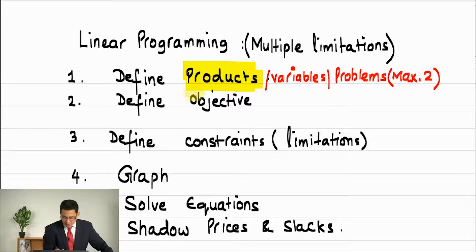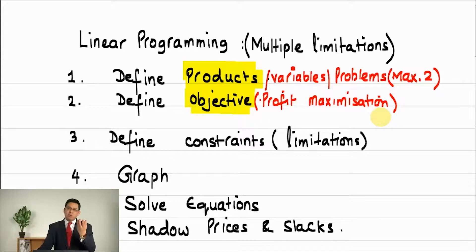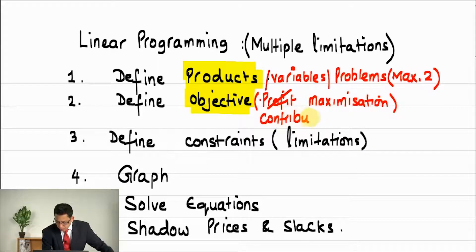Once we know our products, then second is define objective. Objective is an aim of the management which they want to achieve by efficient utilization of resources or these scarcities. This aim is mostly profit maximization. As we discussed applications of relevant costing or marginal costing, there is a slight shift of focus rather than on profit maximization, we start calling it contribution maximization. Aim is to maximize contribution rather than profit because in making decisions we use the marginal costing or relevant costing principles. That variable cost is to be deducted from the selling price.